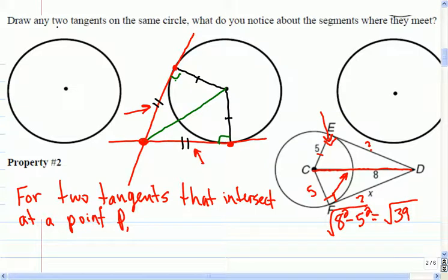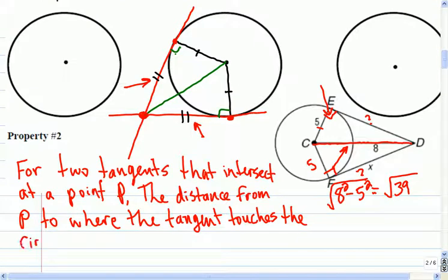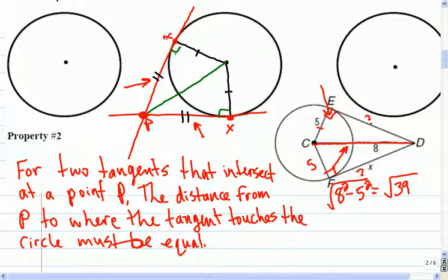The distance from P to where the tangent touches the circle must be equal. So I'm not sure. Let's go with that for the wording. For two tangents that intersect at a point P, so here's the point where they cross, the distance from P to where they touch the circle must be equal. Does that sound better?